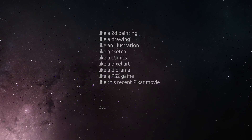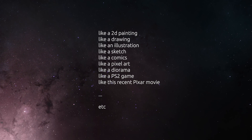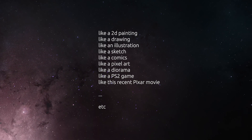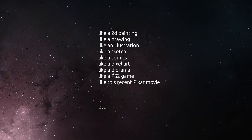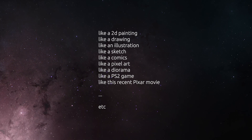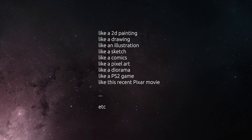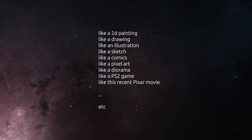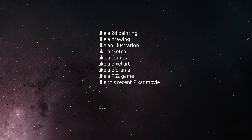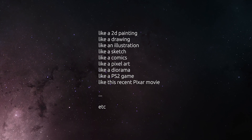The style as a set of properties can be defined very broadly — say it can look like a 2D painting or like a drawing, like an illustration, like comics or pixel art. Or it can be defined slightly more strictly, like a diorama, a PlayStation 2 style game, or a recent Pixar movie for example.